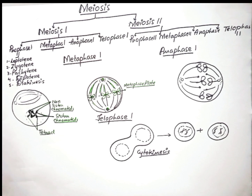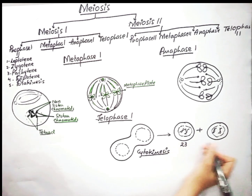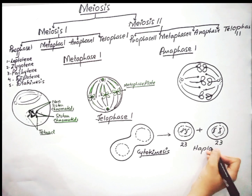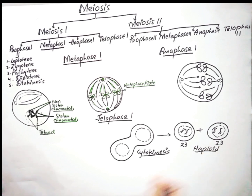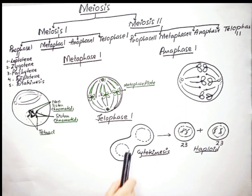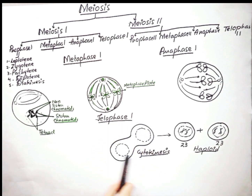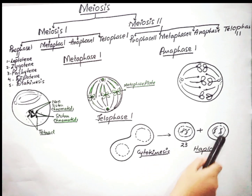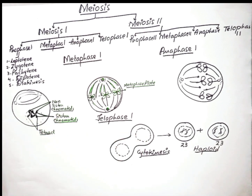As a result, we have two cells, both containing haploid chromosomes — half the number of chromosomes. During telophase 1, the homologous chromosomes separate into their separate nuclei, and telophase is followed by cytokinesis, which means the division of cytoplasm. After cytokinesis, we get two cells containing the haploid number of chromosomes — half the number compared to the parent cell.